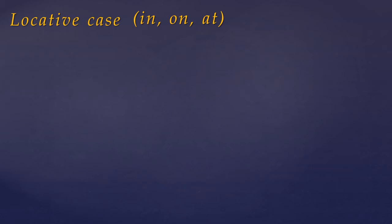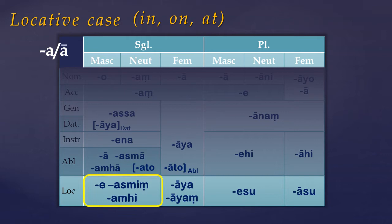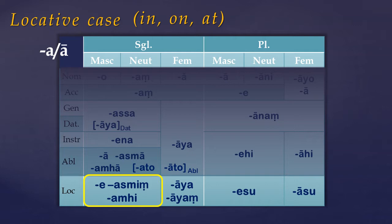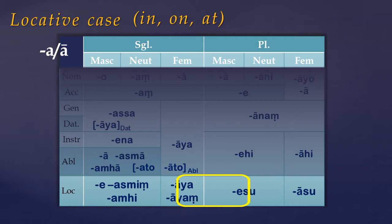An A stem noun in Pali, in the masculine and neuter, takes the inflection E. This is the same as the accusative plural, so the locative noun and the accusative plural actually look the same. There are a couple of alternatives, asming and amhi in the singular. Feminine stems ending in a long A have the Aya ending, and also Aya in the singular. In the plural we have Isu and Asu respectively.